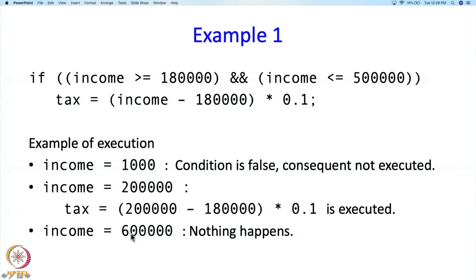Finally, suppose income is 600,000. Is the first condition true? Is 600,000 bigger than 180,000? Yes, it is. So we should check whether the second is also true. But 600,000 is not less than or equal to 500,000, so the second condition is false. As a result, the compound condition is false and the consequent is not executed — the tax assignment does not happen.